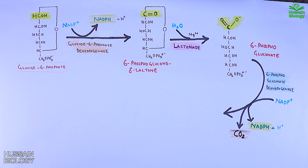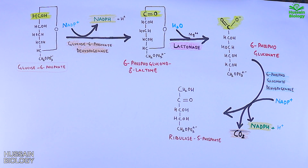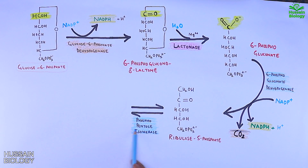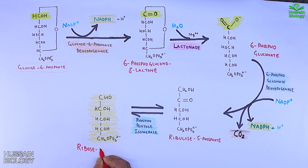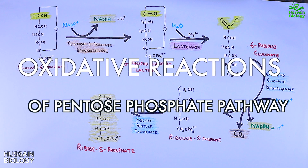CO2 is also generated out of this reaction. Overall, 6-phosphogluconate undergoes oxidation and decarboxylation by 6-phosphogluconate dehydrogenase, and from this reaction we get ribose-5-phosphate. This is acted upon by phosphopentose isomerase and gets converted into ribulose-5-phosphate. This concludes the oxidative phase of the pentose phosphate pathway.